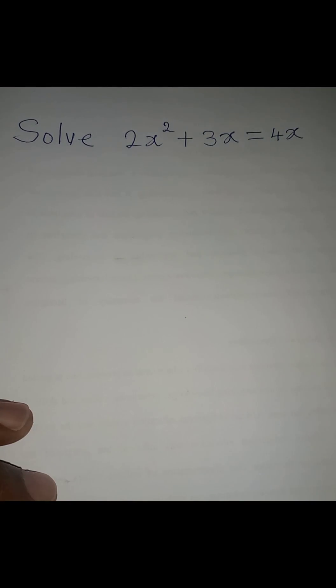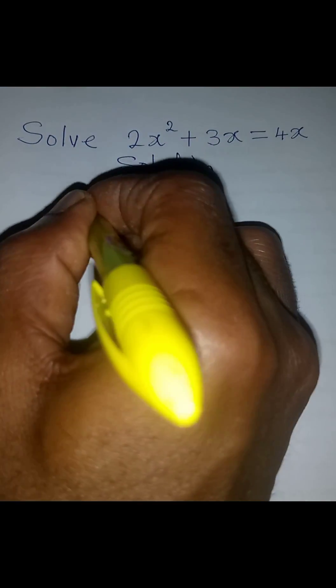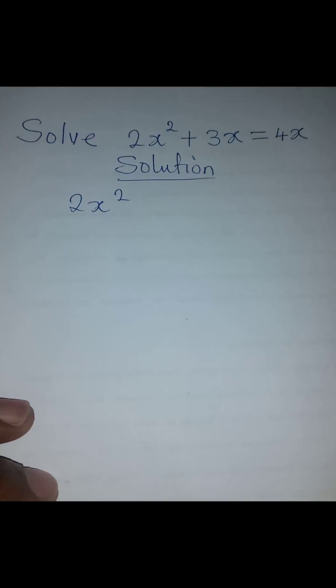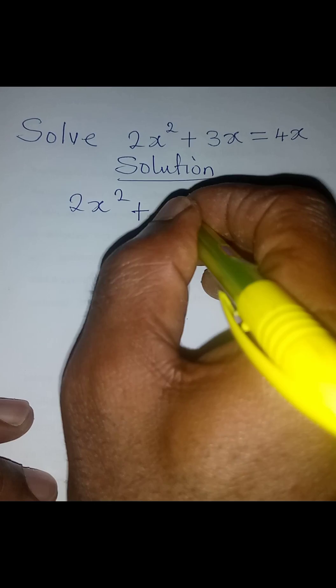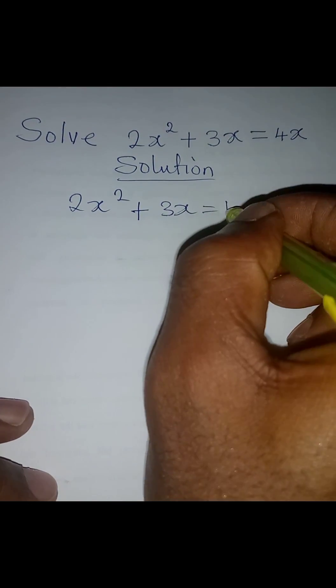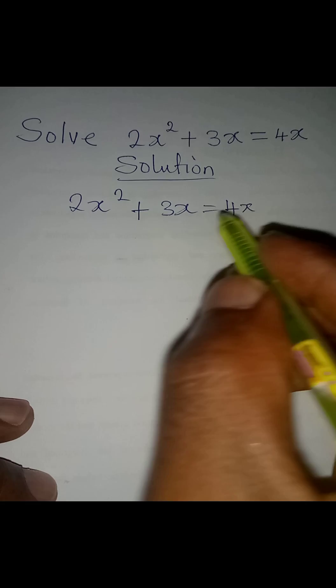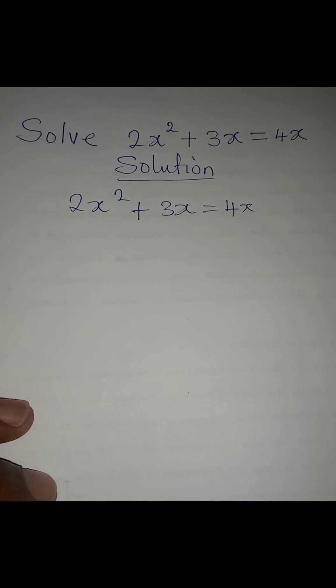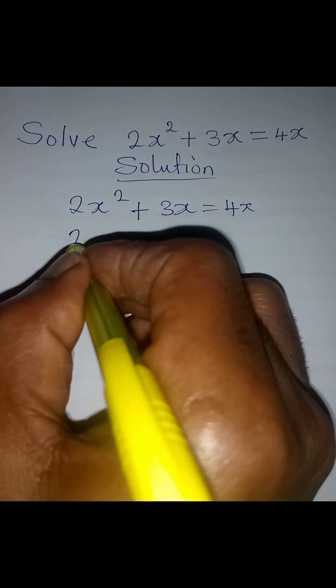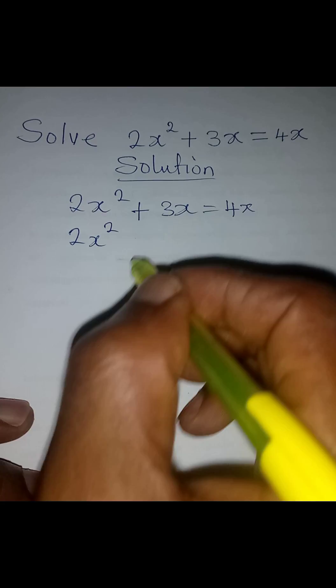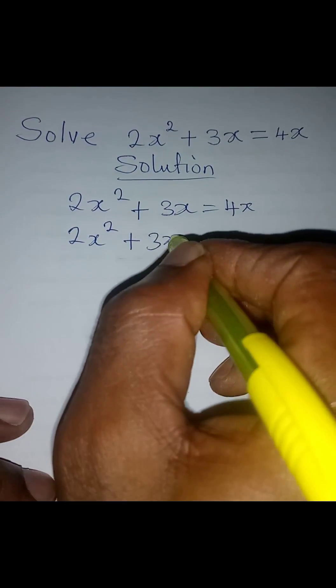Hello everyone, let us solve this problem. We have 2x² + 3x = 4x. This is a quadratic equation and we are going to collect the like terms. So we have 2x² + 3x...